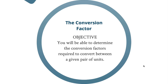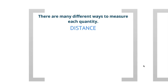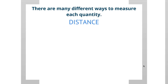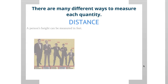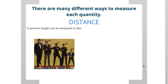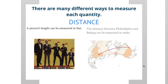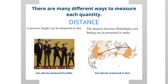You will be able to determine the conversion factors required to convert between a given pair of units. There are many different ways to measure each quantity. Let's take distance for example. A person's height can be measured in feet, and the distance between Philadelphia and Beijing can be measured in miles. However, a person's height can also be measured in miles, and the distance between Philadelphia and Beijing could also be measured in feet. So you can use feet and miles to measure any kind of distance.